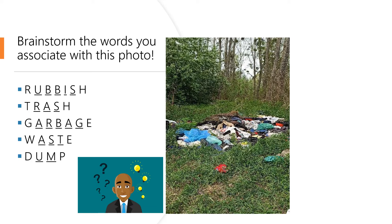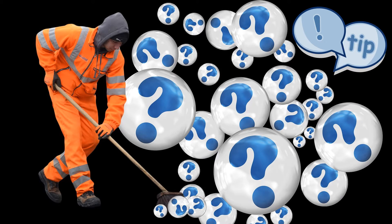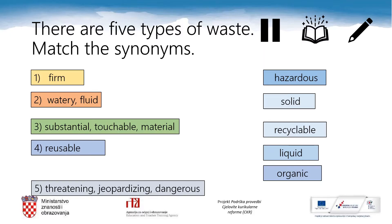Well done! There are five types of waste — do you know which? There are some synonyms to help you name them. The synonyms are: firm, watery or fluid, substantial, touchable or material, reusable, and threatening, jeopardizing or dangerous. Please pause this video lesson and try to do the matching in your notebooks.